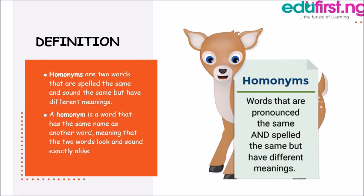Homonyms, in simple terms, are two words that are spelled the same and sound the same but have different meanings. You probably would have come across words that are pronounced the same and spelled the same but have different meanings, and also words that are pronounced the same, spelled differently, and have different meanings. This category of words is what we refer to as homonyms in the English language.